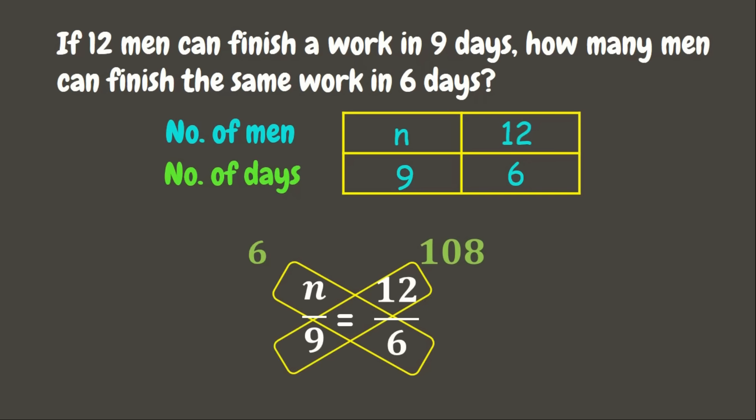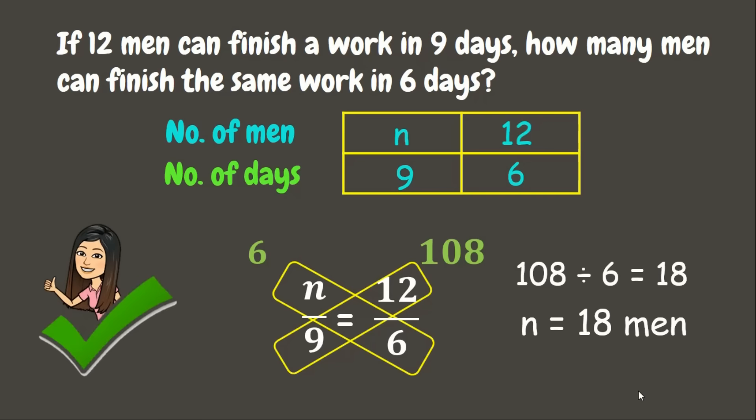The next step is to divide: 108 divided by 6 is 18. Therefore, n equals 18 men. This means that to finish the same work in 6 days, we need 18 men. Great job! Now let's go to our next and final problem.